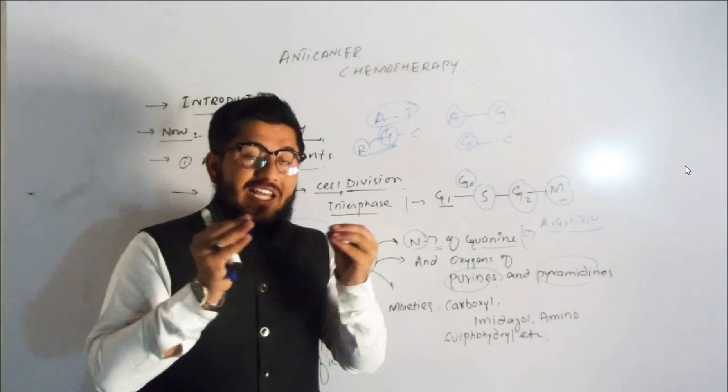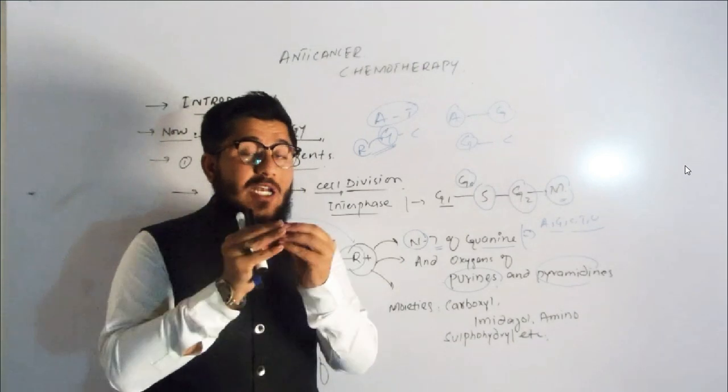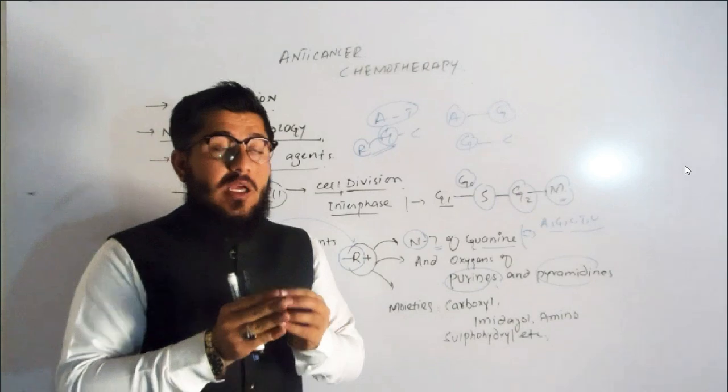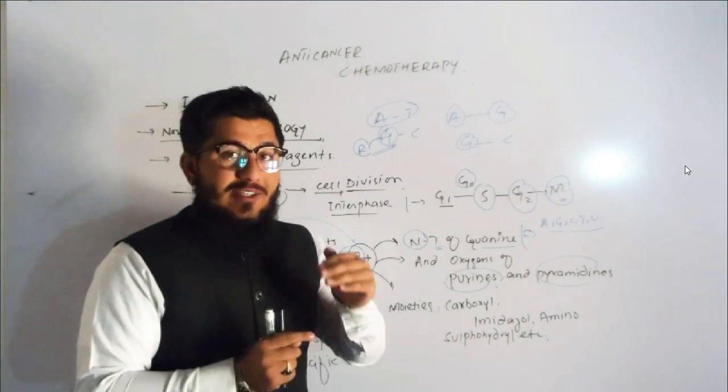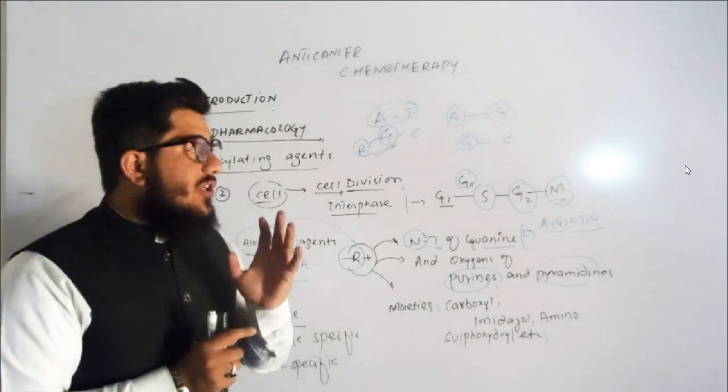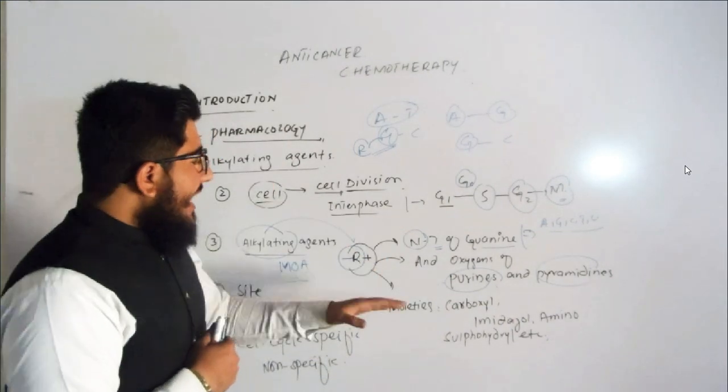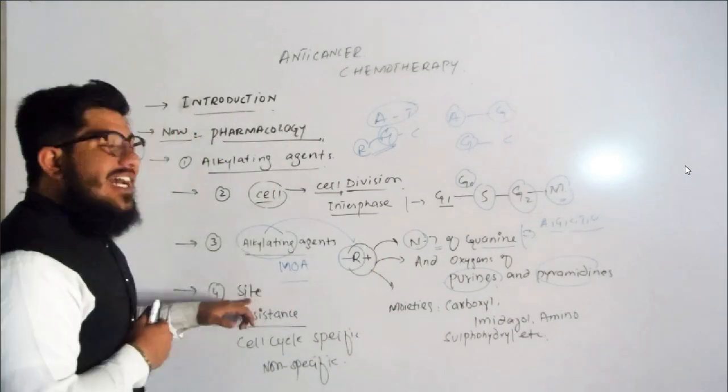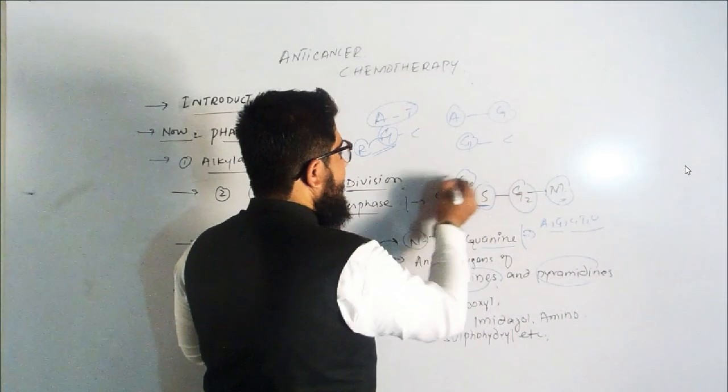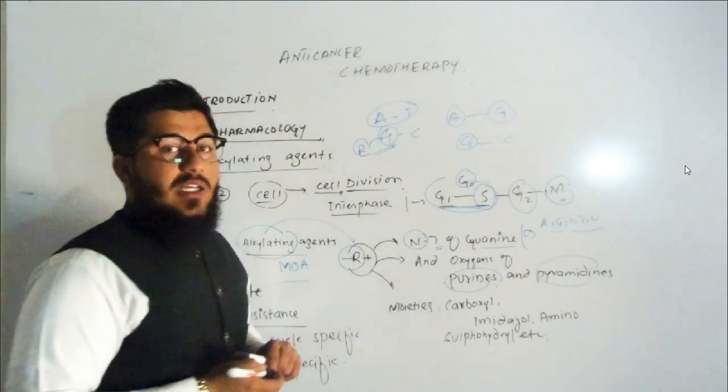After receiving the alkyl group, there will be no further base pairing. If there is no real base pairing, the DNA that is supposed to form will not be formed, so cell growth is stopped. That's our goal: to stop cell growth. Now, what is the site of action? Its site of action is G1 and S phase—the very site of action of alkylating agents.